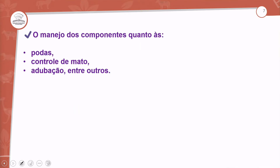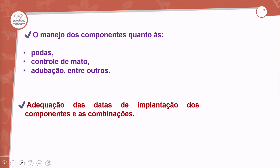Como fazer isso? Manejo. Podas. Podas de controle em relação a ervas da linha. Adubação em relação ao processo dos cultivares. E adequação das datas de implantação. Essa adequação das datas de implantação tem que vir de encontro com os componentes e com as combinações.